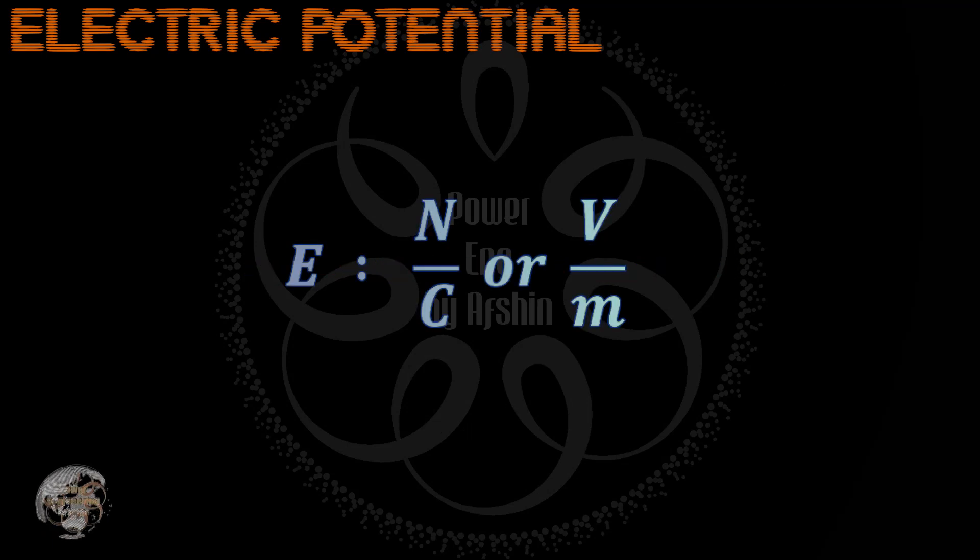The unit of electric field intensity, according to Coulomb's law, is newtons per coulomb, as shown on screen. Another unit used for electric field strength is volts per meter. This unit is much more commonly used, and is often considered the standard unit for electric field strength.